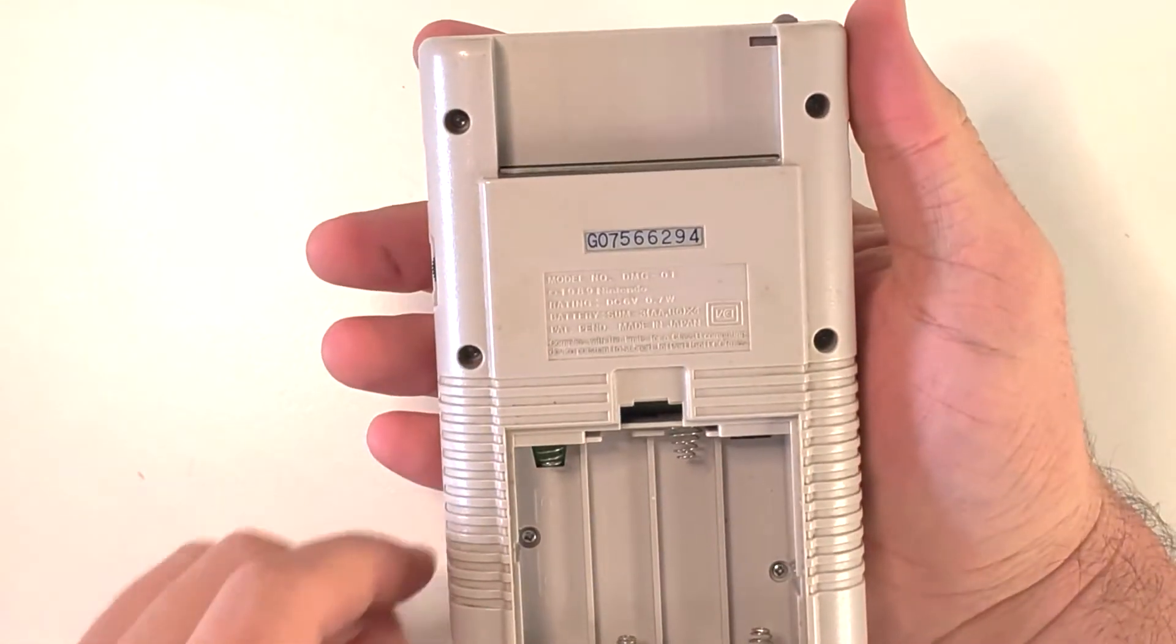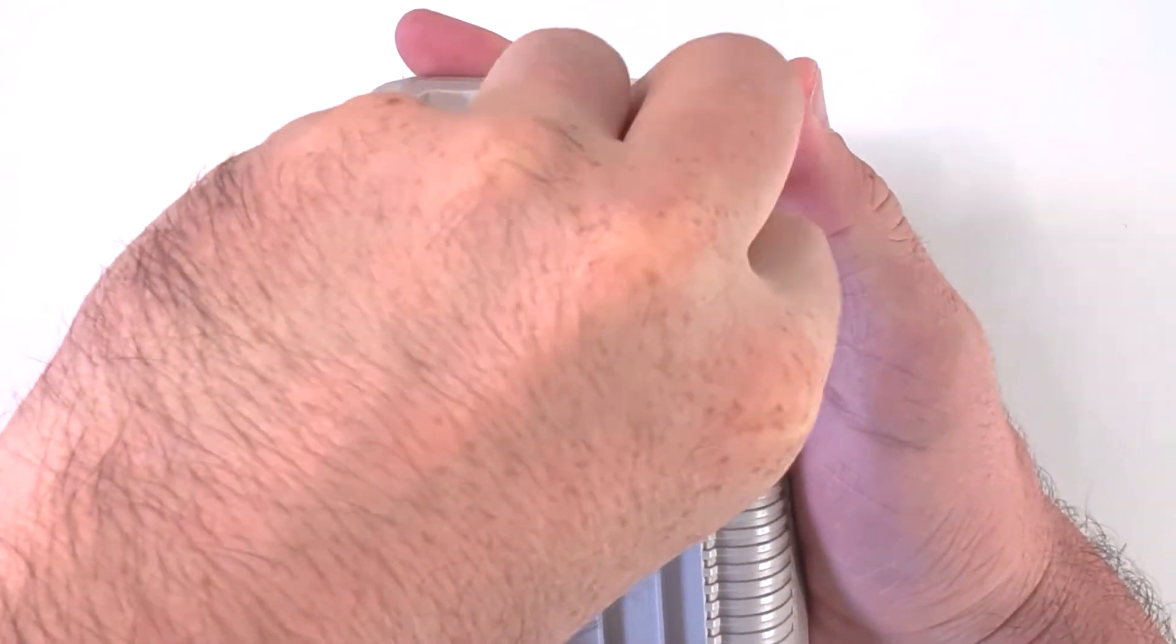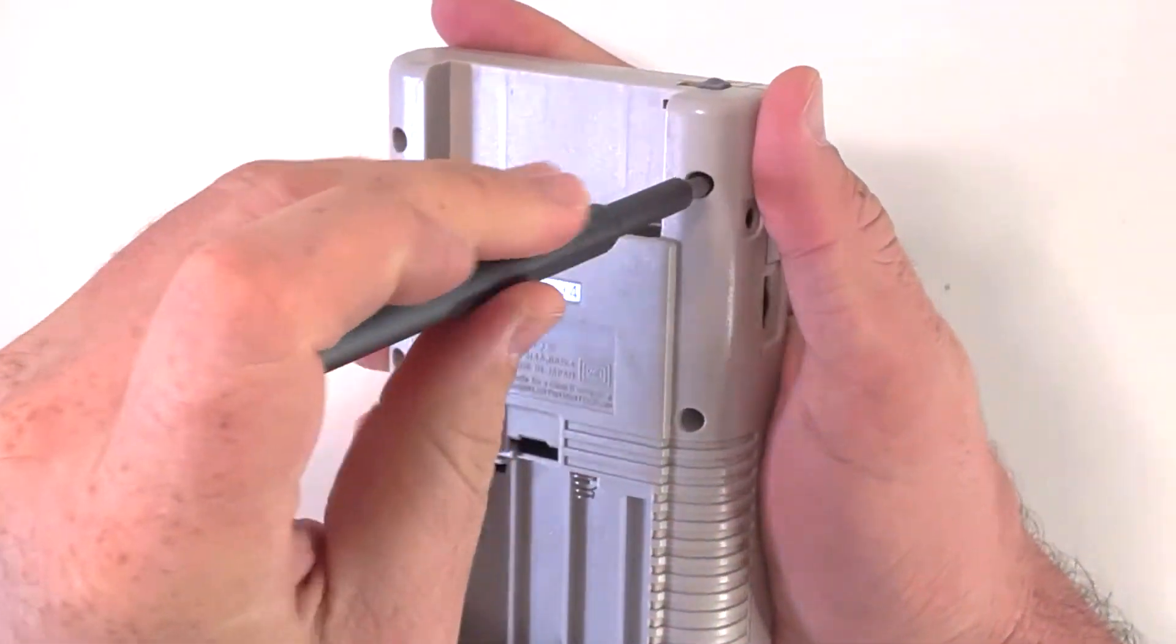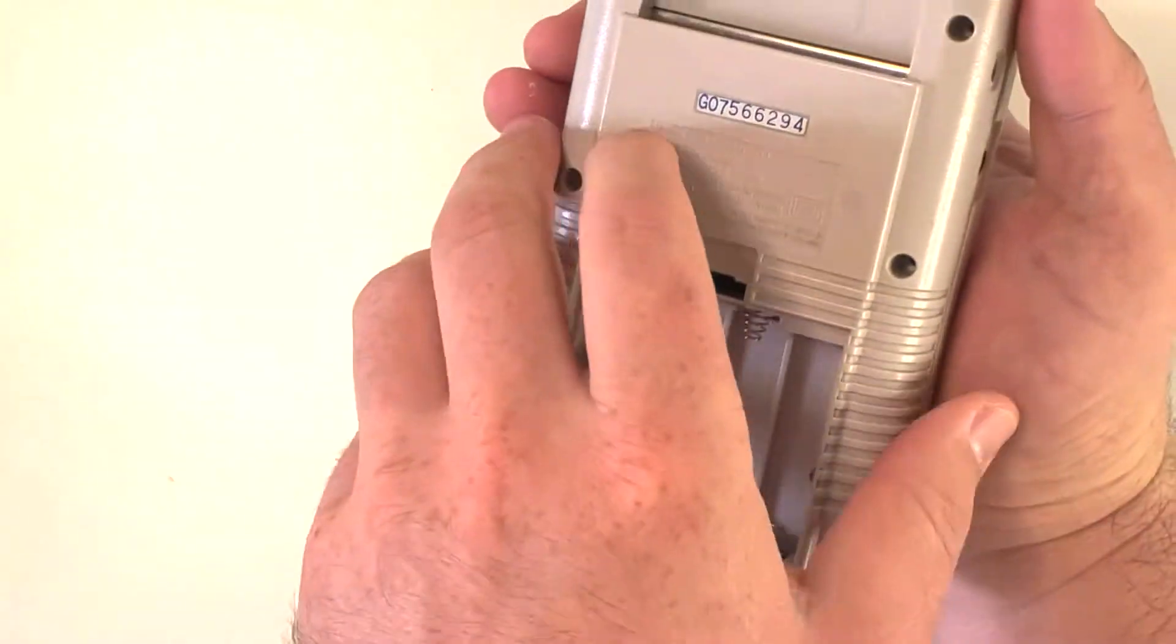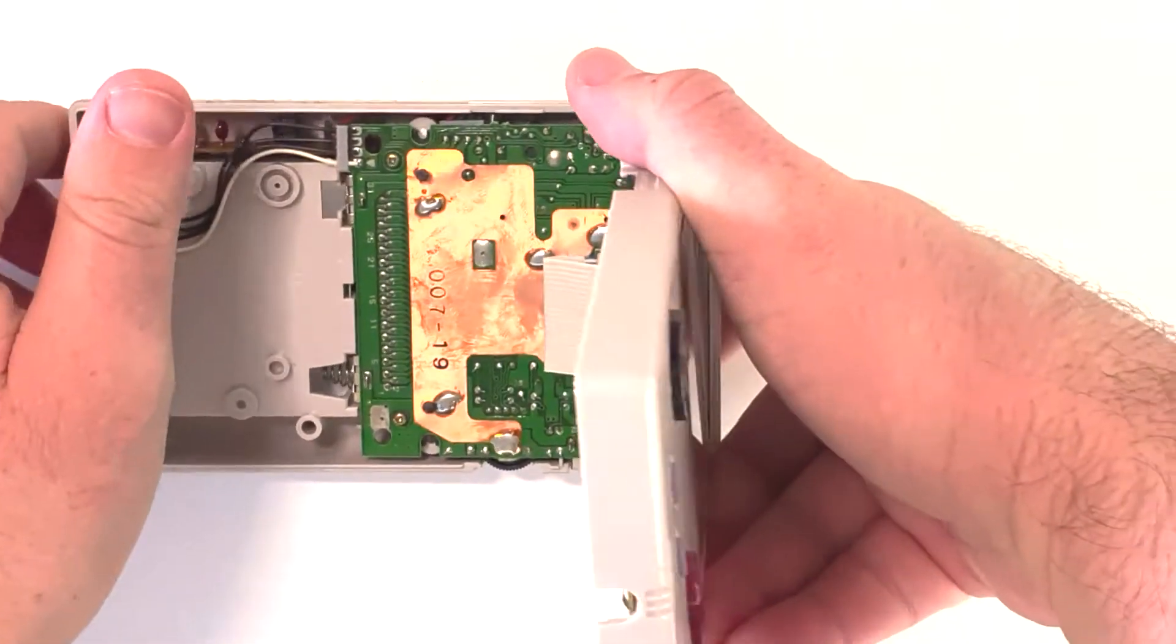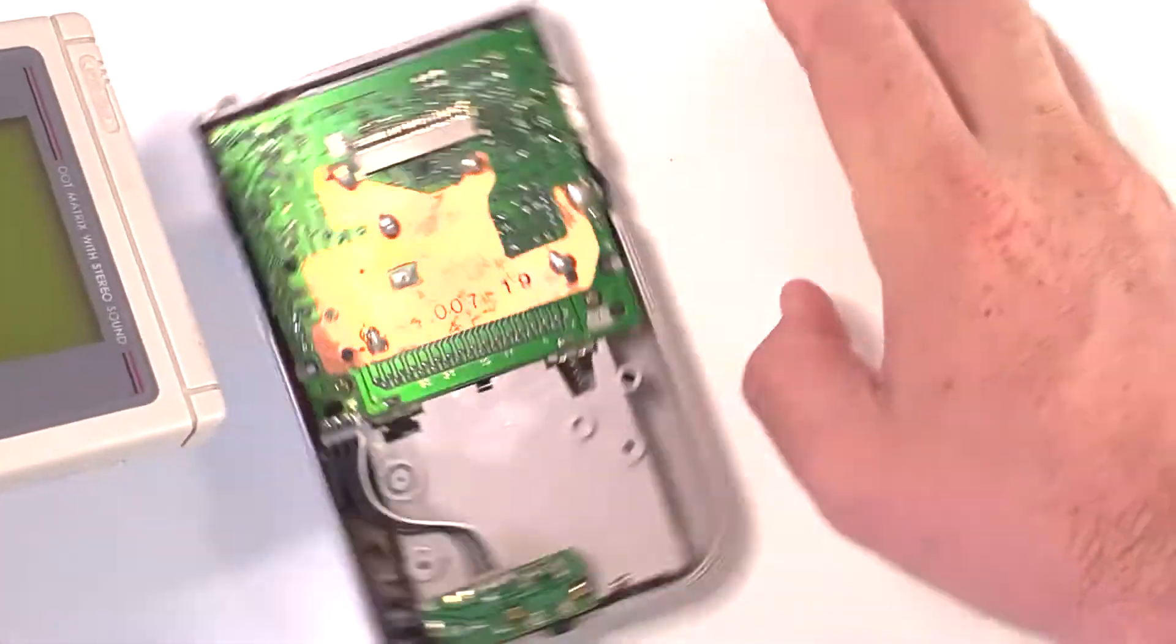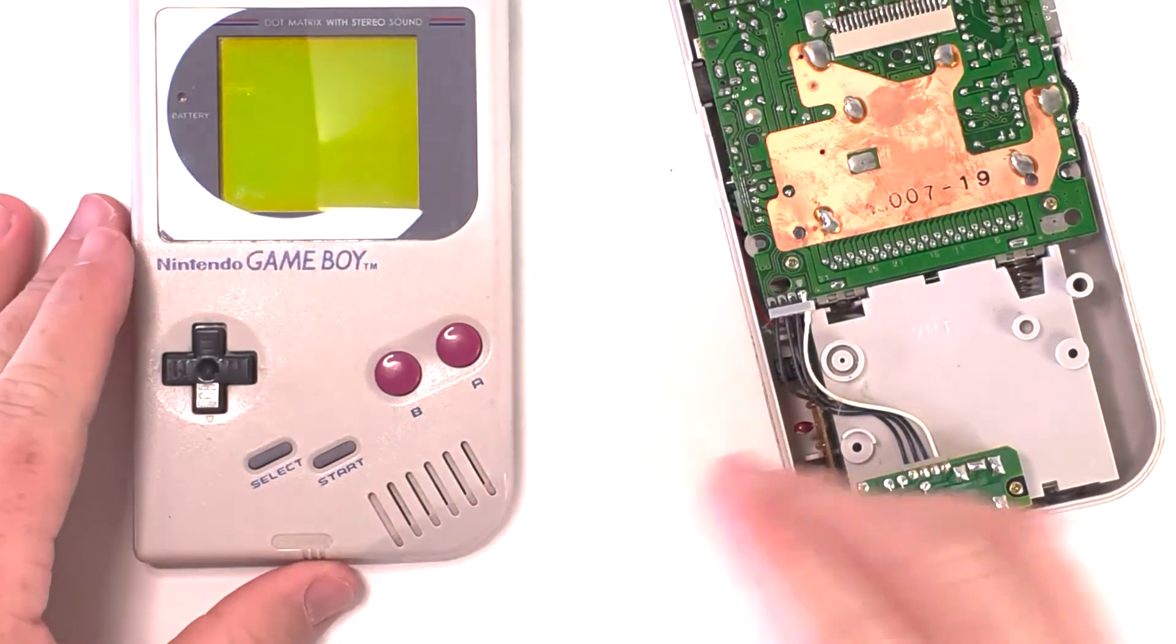Taking the unit apart now, there are six screws, two hidden underneath the two batteries behind the battery cover. Once you've gotten all of that apart, the two halves are held together by a ribbon cable. A very sturdy ribbon cable, I might add, unlike ribbon cables of today, which seem to tear if you look at them wrong.